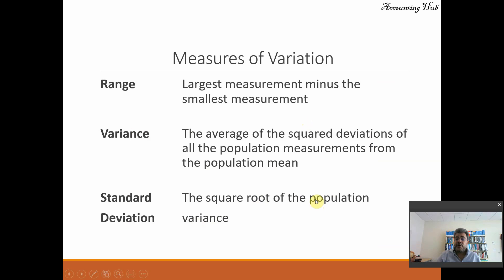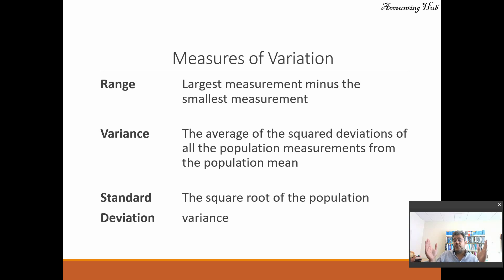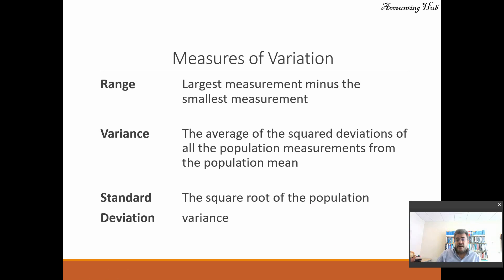So here we have three measures. Range is the largest minus smallest measurements. For example, our revenue: the lowest revenue is 10, the largest revenue is 22, so the range is 12 — 22 minus 10. Variance is the average of squared deviations of all population measurements from the population mean, very useful for stats, but in regular business we focus more on standard deviation, which is the square root of the population variance.